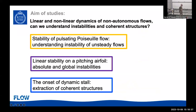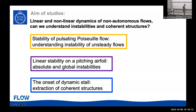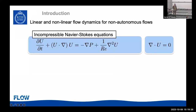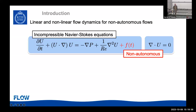The aim of this study is to understand the linear and non-linear dynamics of non-autonomous flows — can we understand instabilities and coherent structures? I'll start by talking about a much simpler flow — the stability of pulsating Poiseuille flow — to understand the instability of a flow with inherent unsteadiness. We start with incompressible Navier-Stokes equations, but with an inherent time dependence through volume forcing or time-dependent boundary conditions, meaning the Navier-Stokes operator has a time dependence and the base flow is time-dependent.